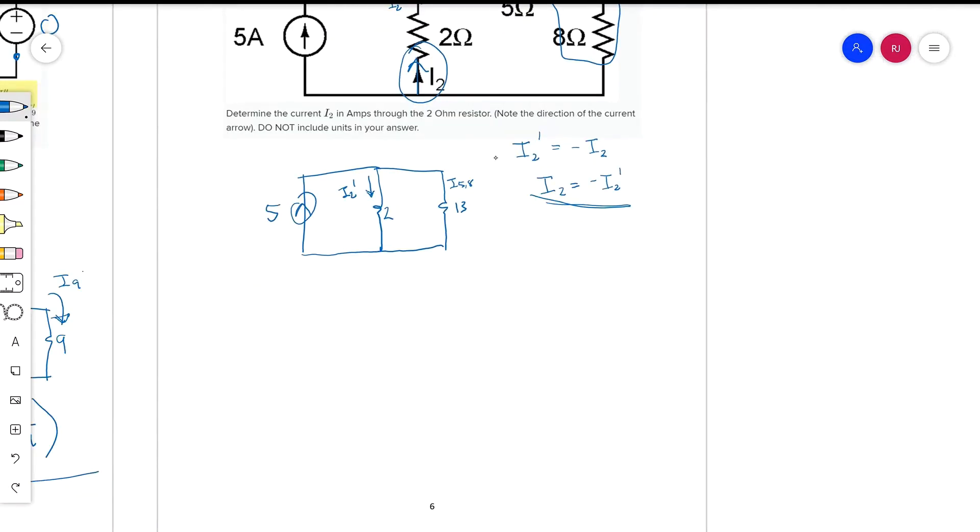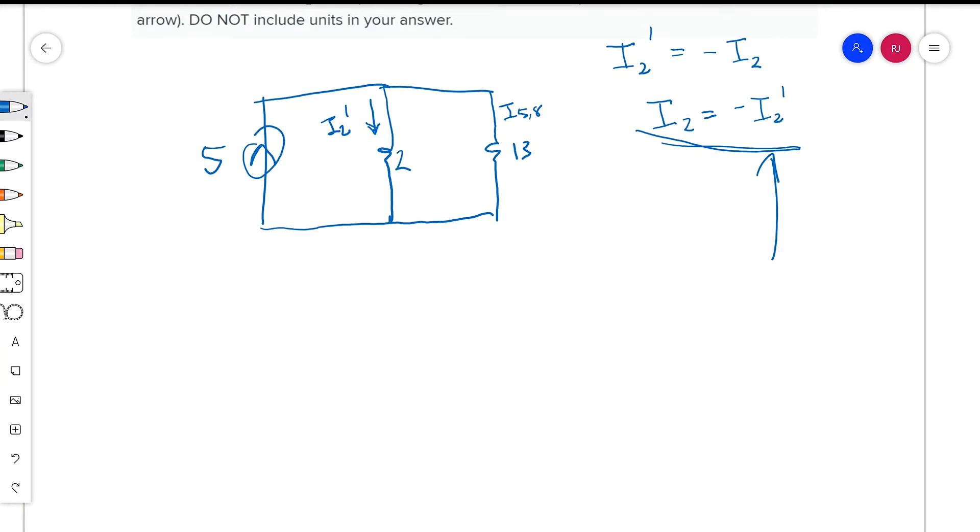So now the goal is to find what I2 prime is, and we see I2 prime in this reduced circuit that we've drawn. And again, we're just going to use the current division formula to help us. So I2 prime is equal to the source current, that's the 5 amps, and then you'll multiply that by the opposite resistor divided by the sum of the two resistances. And then this would be the I2 prime value.